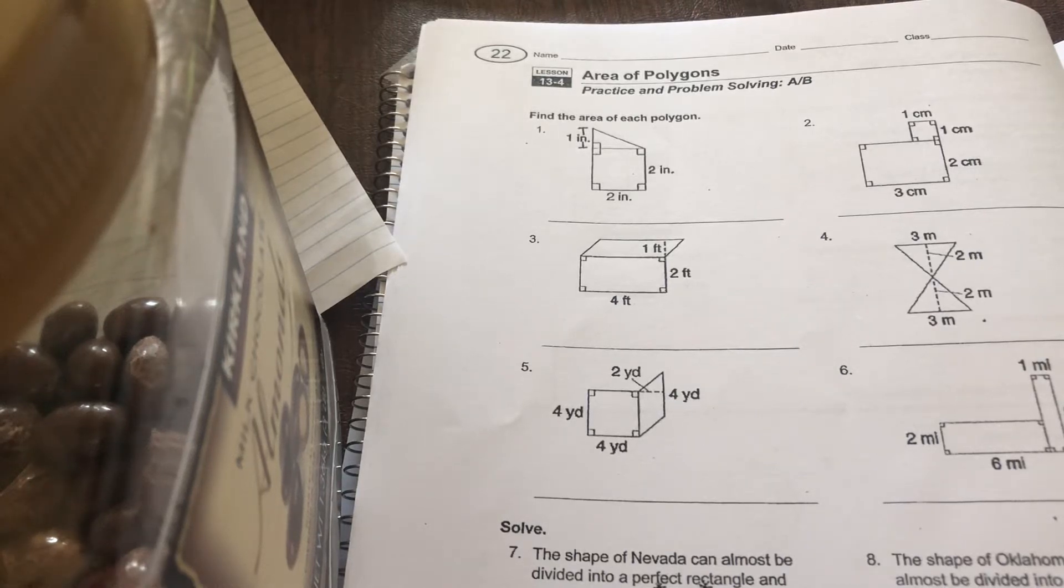Hello again my little mathematicians. Today we're going to help you get started on Worksheet 13-4 AB, Practice and Problem Solving with Area of Polygons, or sometimes referred to as composite shapes, because it's multiple shapes put together.